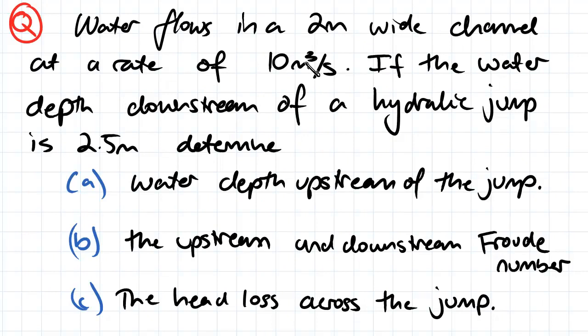And if the depth of water downstream of a hydraulic jump is 2.5 meters, determine A, water depth upstream of the jump, and B, the upstream and downstream Froude number, and C, the head loss across the jump.